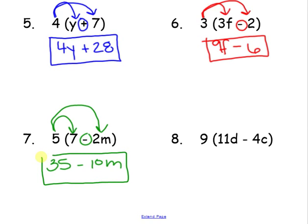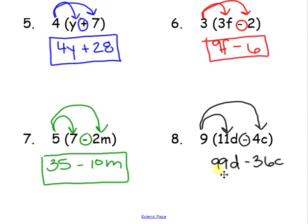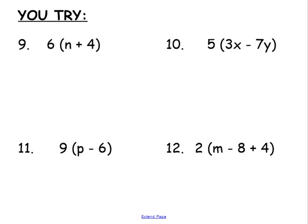Last but not least, 9 times 11d. Well, 9 times 11 is 99, and then we have our d. Bring down the operation which is minus, 9 times 4c. Calm down, we got this. 9 times 4 is 36, and the c is attached to it. We cannot combine these two in any way because we have a d and a c and we don't know what they are, so that is our final answer. You try these, and then I will work on them at the same time and we will compare answers.